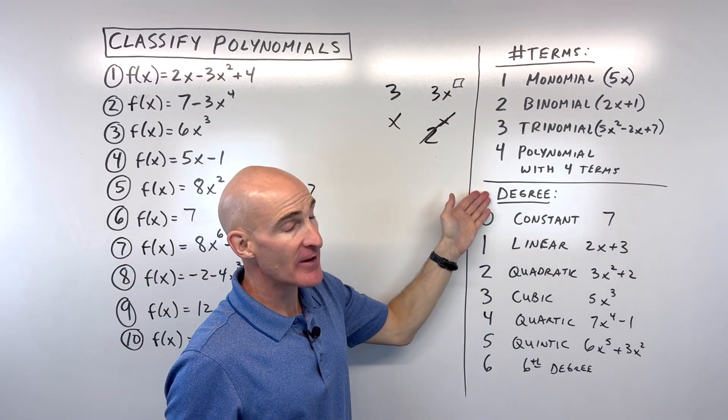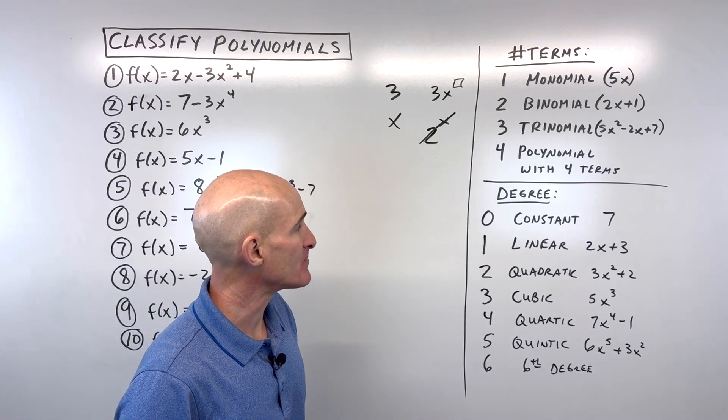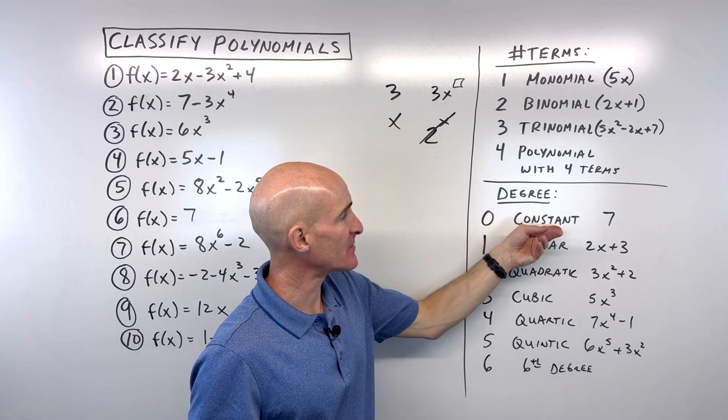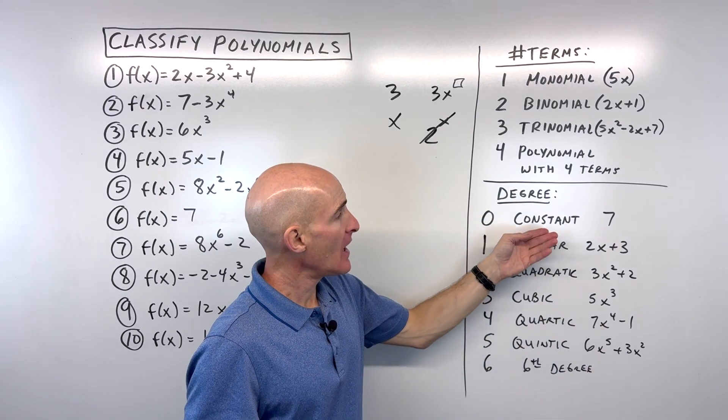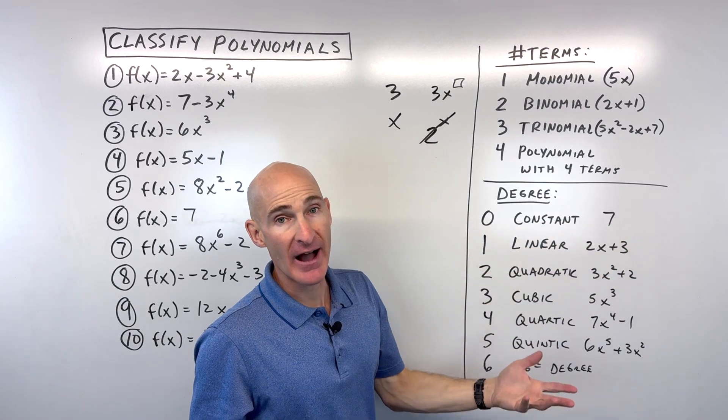How do we classify it by the degree? Now the degree is whatever the highest exponent or that highest power is. So if it's a zeroth degree, we call that a constant. This is sometimes referred to as the type. And if it's zero degree, that just means it's like a number, like seven or five or two.